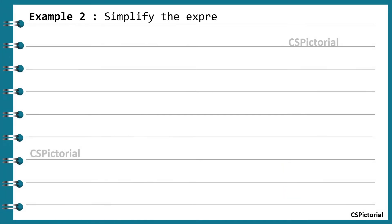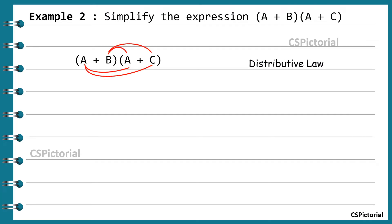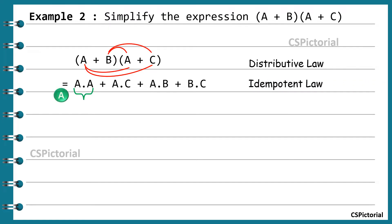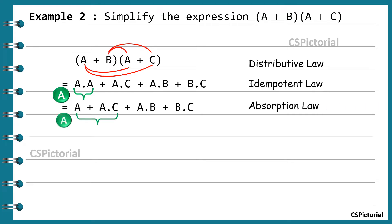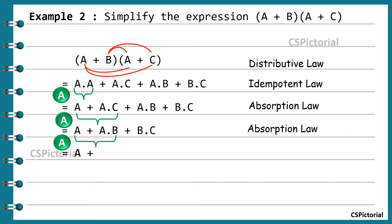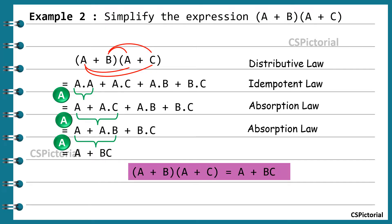Simplify the expression (a+b)(a+c). Applying the distributive law, it becomes a·a + a·c + a·b + b·c. By the idempotent law, a·a becomes a. Applying the absorption law, a + a·c simplifies to a, and a + a·b simplifies to a. The final simplified expression is a + bc.